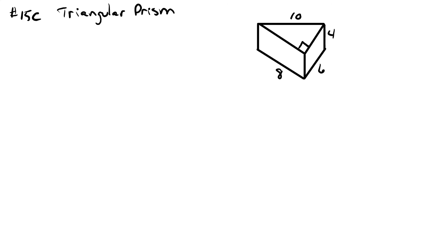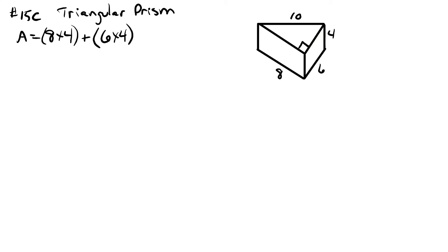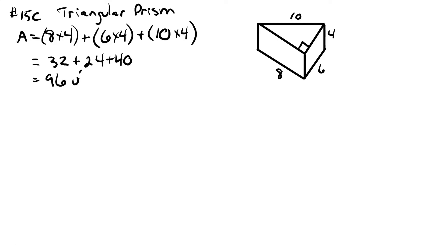Number 15c. In this case we have a triangular prism. We want to find the area of the two visible faces plus the area of the back face. The first face is eight wide and four high. The next face is six by four. The back face, which is hidden behind the top of the prism, is ten wide and four high. That gives us thirty two plus twenty four plus forty, which adds up to ninety six units squared — that's our lateral area.